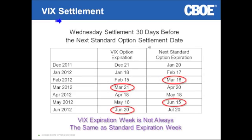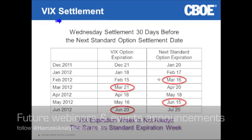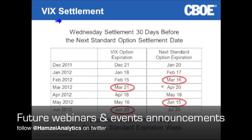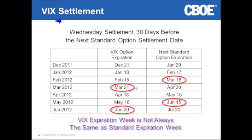Note that there are some months where VIX settlement is not the same week as the standard option expiration. This generally happens about four times a year, every three months or so. For example, the standard option expiration for March 2012 contracts is March 16th, but the VIX contracts are actually going to expire the following week. That's because the VIX expiration dates are based on being 30 days before the next standard expiration — March 21st is 30 days before April 20th.